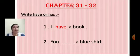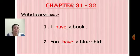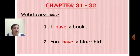Write in your workbook children. Now see the next one, the second one: You dash a blue shirt. Again the sentence begins with you, so we write have. You have a blue shirt. H-A-V-E. Done children?